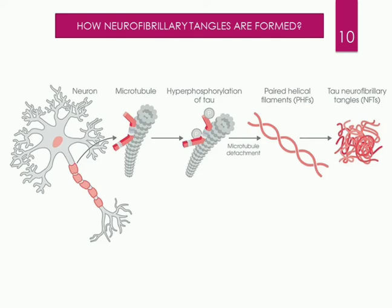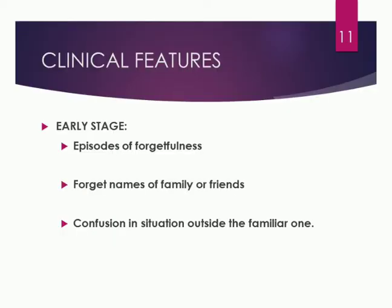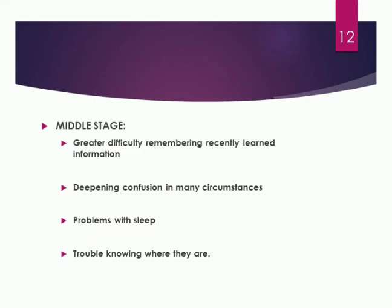There are three stages in Alzheimer's disease: early stage, middle stage, and late stage. In the early stage, there will be episodes of forgetfulness even though the person is leading a normal life and may not be aware of any memory loss. They may forget names of family or friends but take it casually, and experience confusion in situations outside familiar ones. In the middle stage, there is greater difficulty remembering recently learned things like phone numbers or names, deepening confusion in many circumstances, problems with sleep, and trouble knowing where they are.